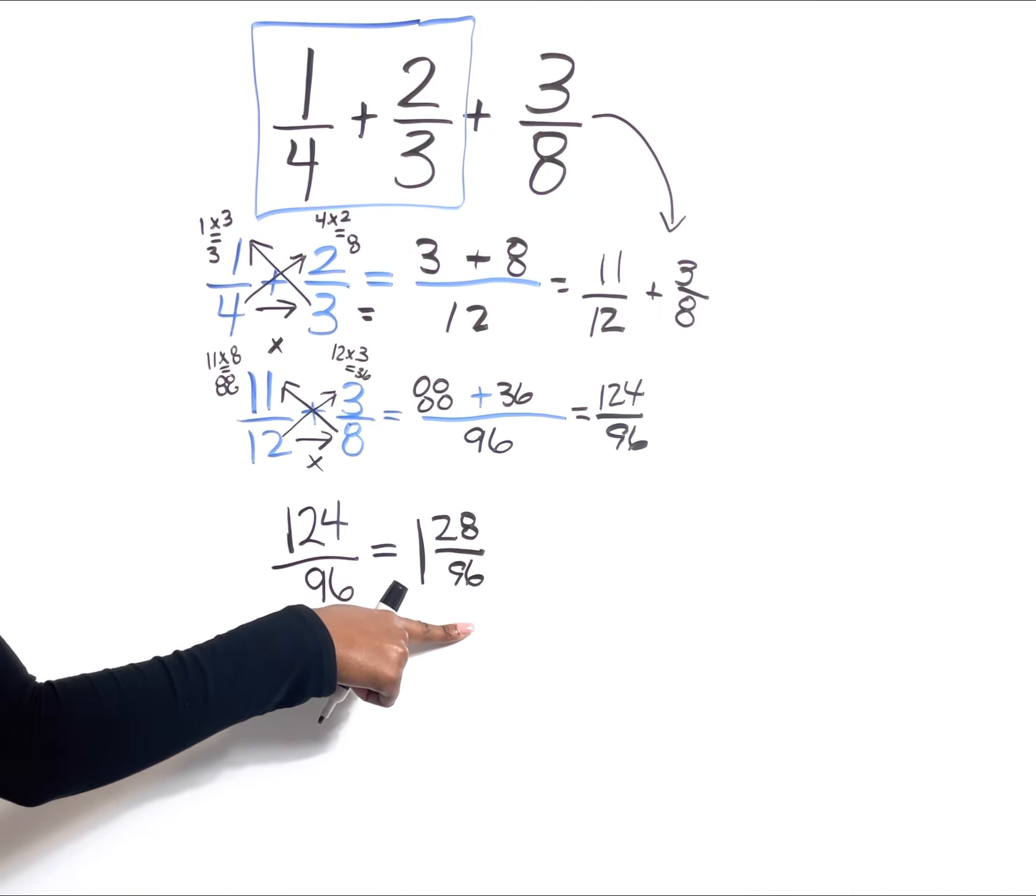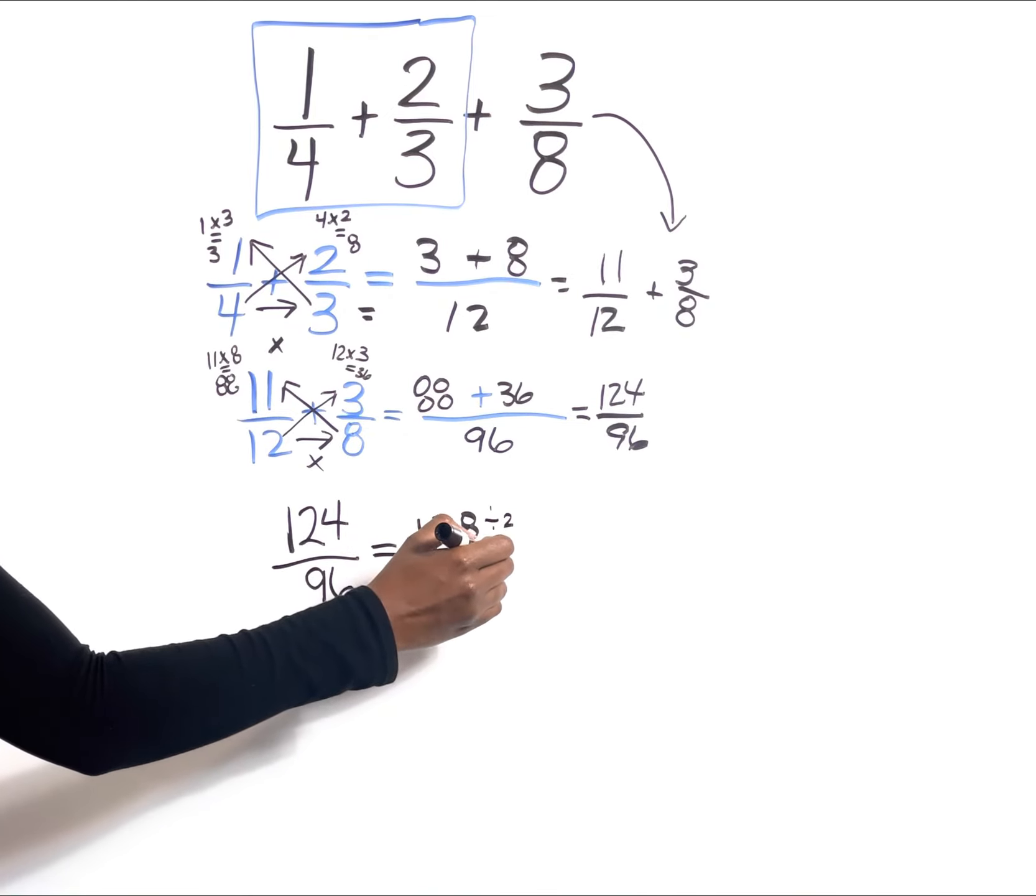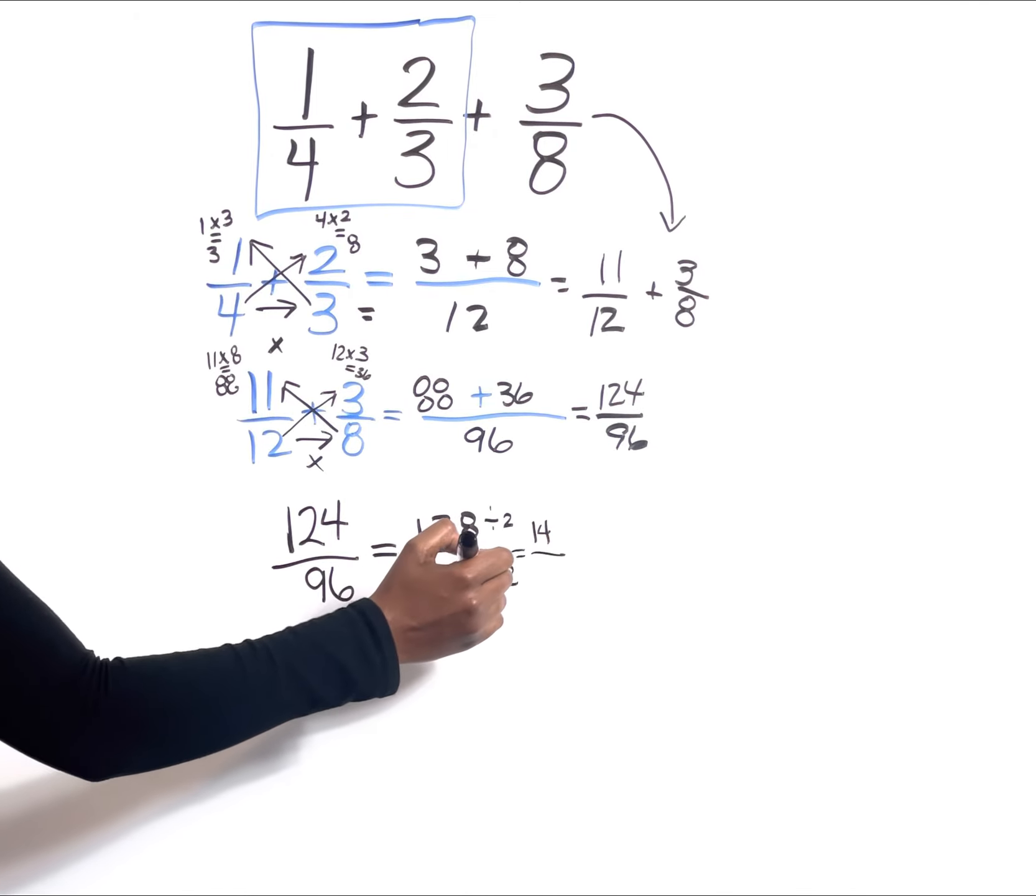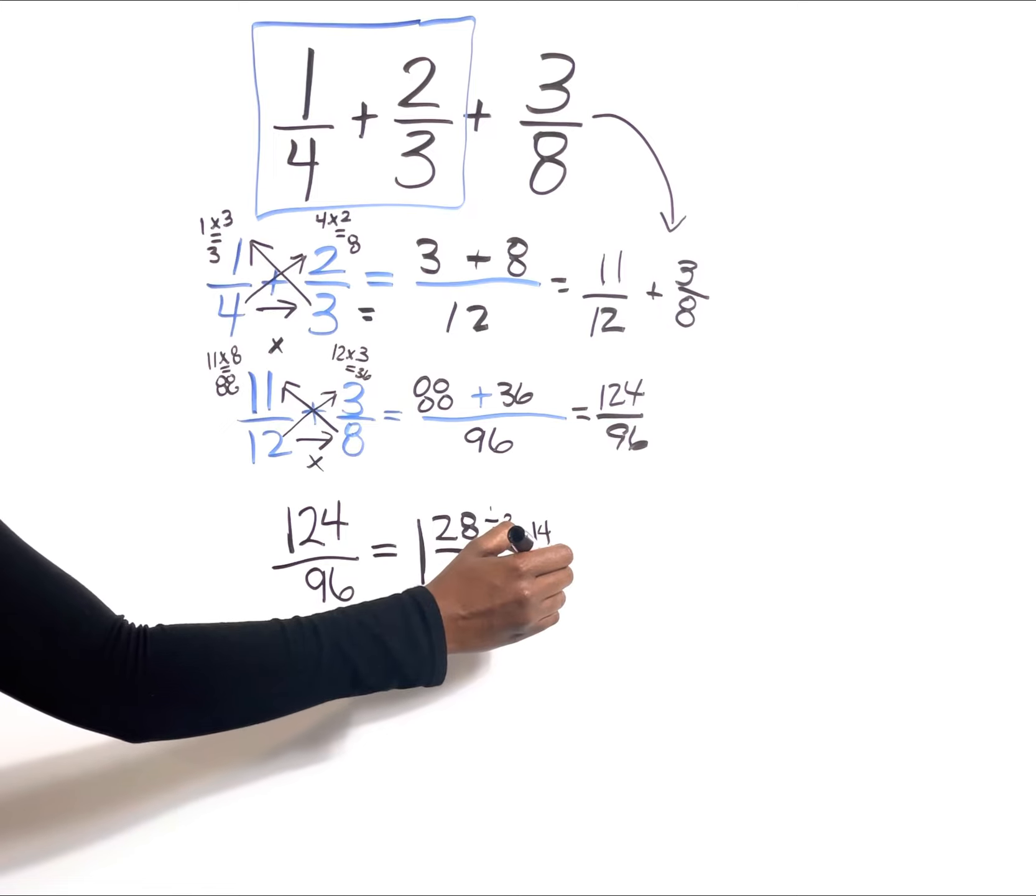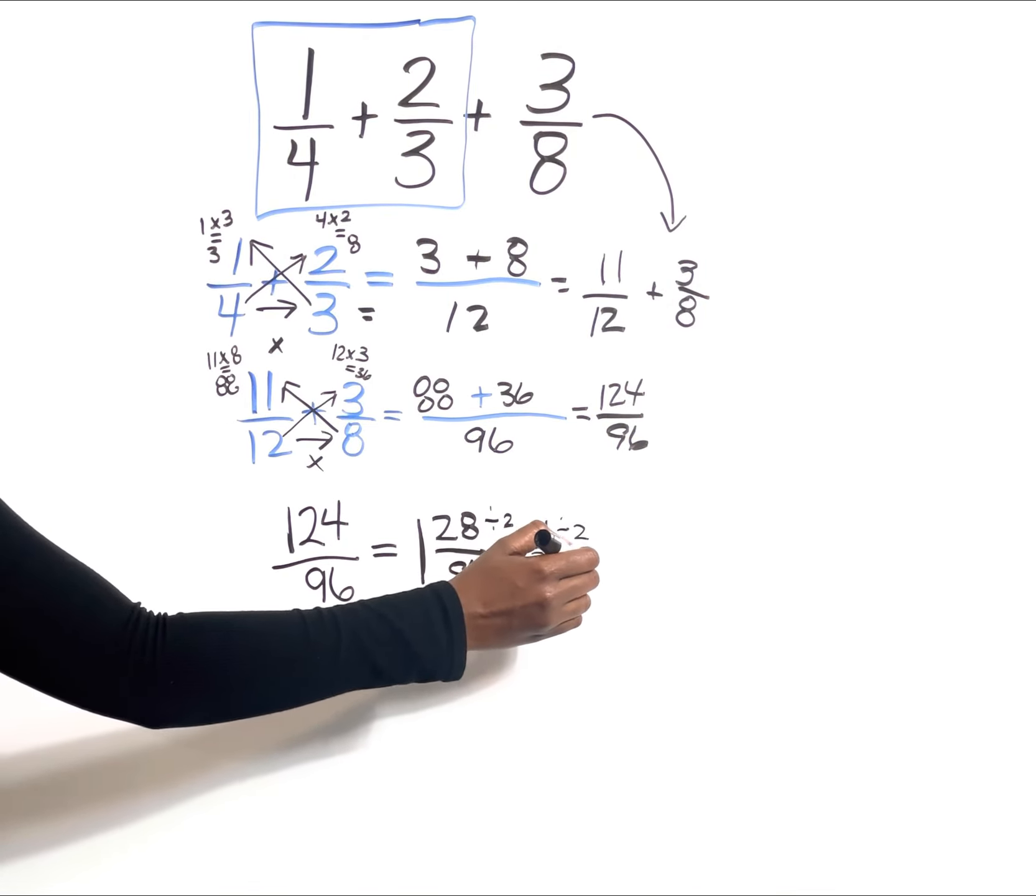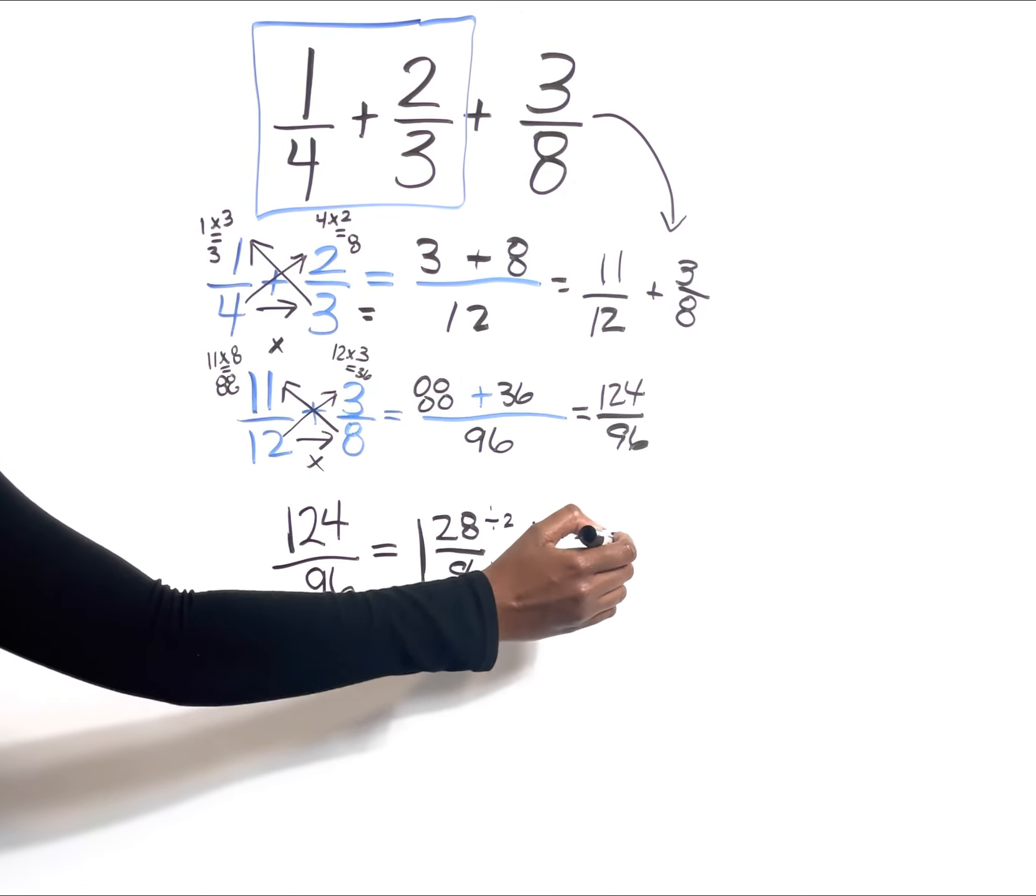28 and 96 are both even, which means I can reduce both of those by 2. 28 ÷ 2 is 14, and 96 ÷ 2 is 48. I still got two even numbers, so I can reduce by 2 again. 14 ÷ 2 is 7, 48 ÷ 2 is 24. That's 1 and 7/24, our final answer.